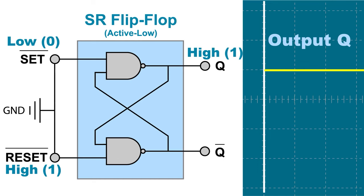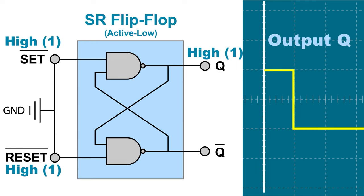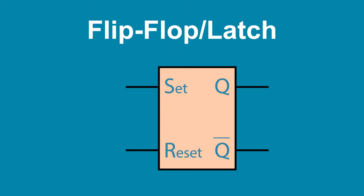In a previous video, when we learned about flip-flops and latches, I talked about how in sequential logic devices, the outputs are affected by both the current state as well as the previous state of the inputs. Shift registers are made of flip-flops and latches, so let's review how they work. Flip-flops and latches have two inputs: one that sets the output high and a second that resets the output low.